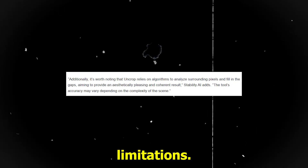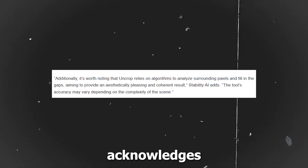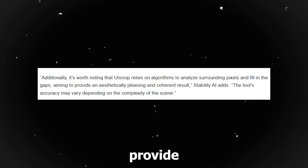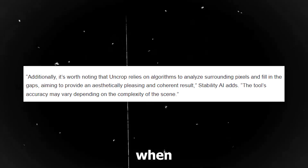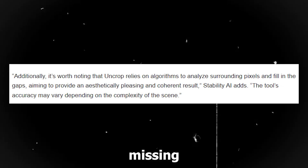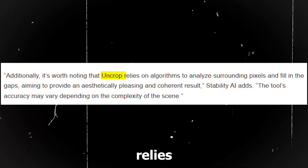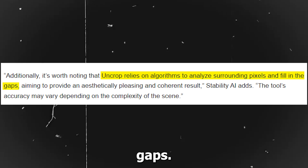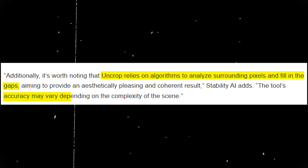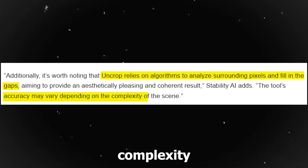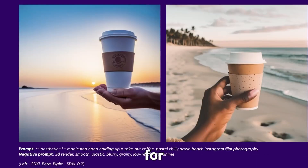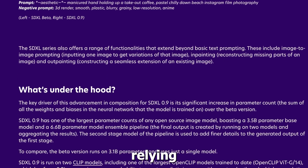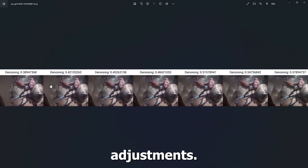However, it is important to note that UnCrop does have its limitations. Stability AI acknowledges that the tool may not always provide accurate results, especially when dealing with images that have extensive missing content. As UnCrop relies on algorithms to analyze surrounding pixels and fill in the gaps, the accuracy of the tool's output may vary based on the complexity of the scene. Users should be aware of these limitations and exercise caution when relying on the tool for image adjustments.